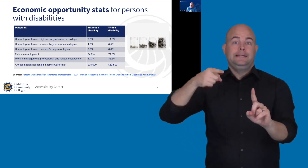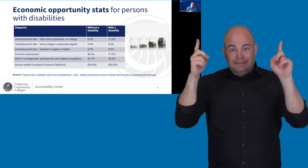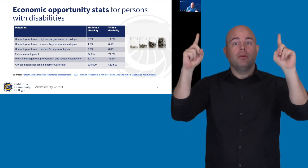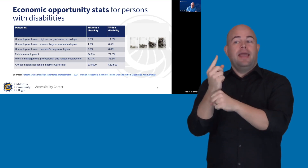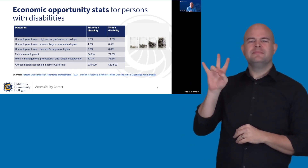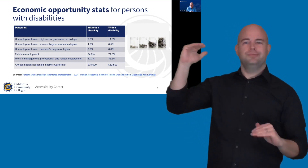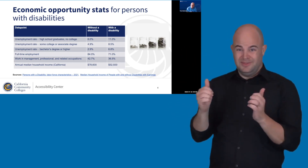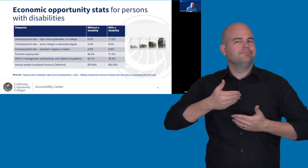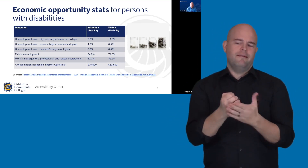The bottom line is that by increasing their success and ability to attain higher educational achievement, we can make a real difference. Looking at annual median household incomes, a household without a disability in California is $78,600 versus $52,500 for one with a disability. By ensuring all students — especially those with disabilities — have access and are successful, we can have a lifetime impact on their economic opportunities.